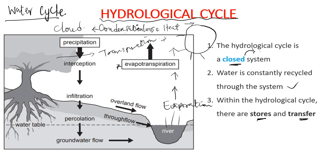Once clouds grow to a larger size, precipitation occurs — water falls to the Earth's surface in the form of rain, snow, or hail. As the water reaches the Earth's surface, it first lands on things like trees, which act as an intercept. This interception means some water does not have direct contact with the Earth's surface.